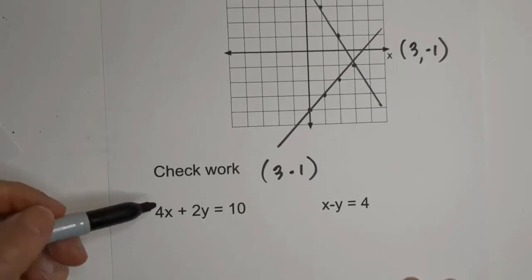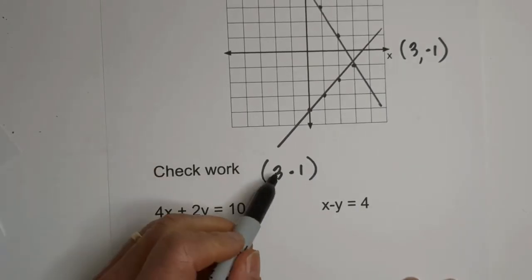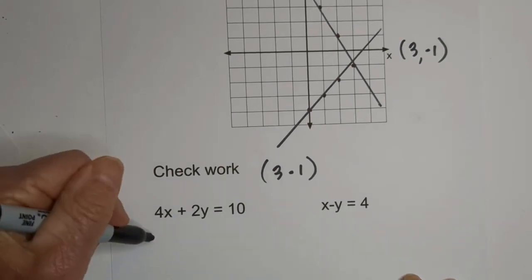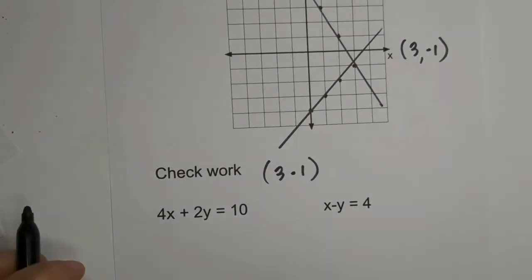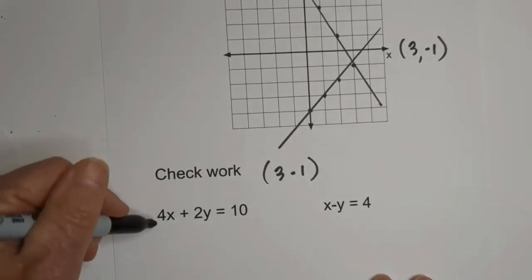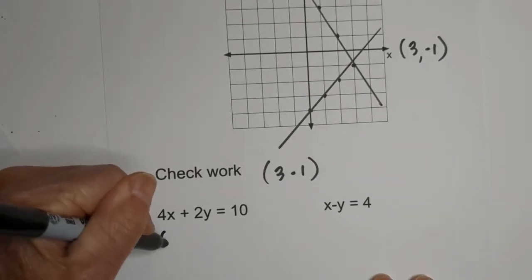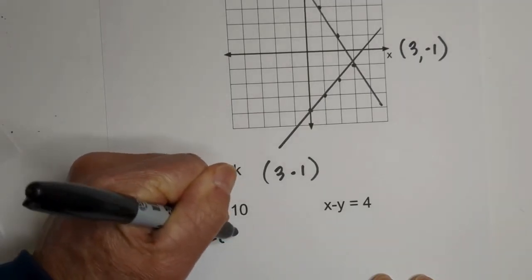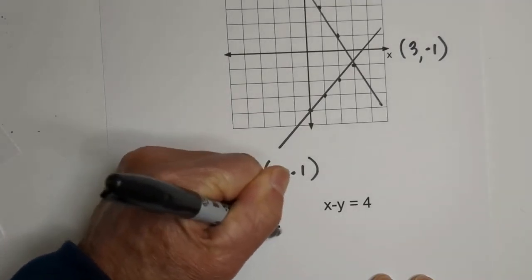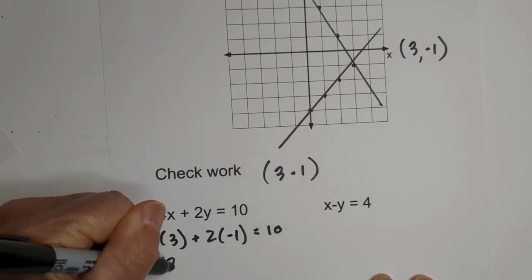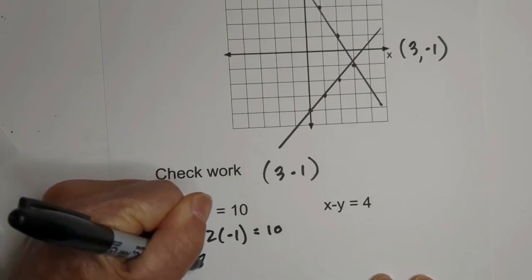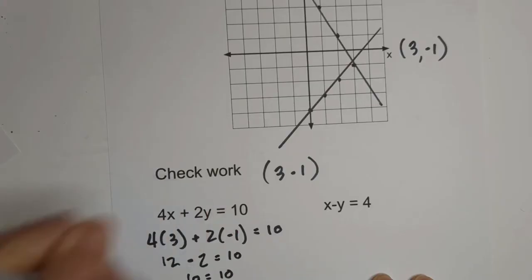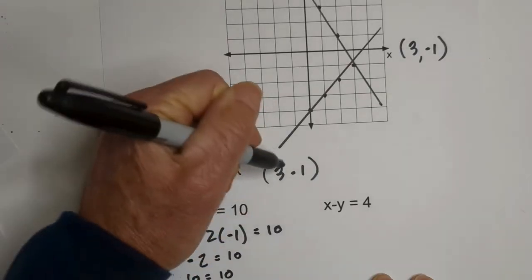So now let's check our work. Let's go ahead and here is your x. This is your y. So we have 4 times 3 plus 2 times negative 1. And that should equal 10. This is 12 minus 2, which is indeed 10.